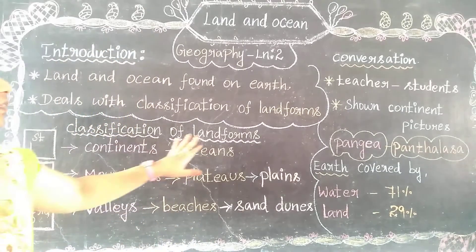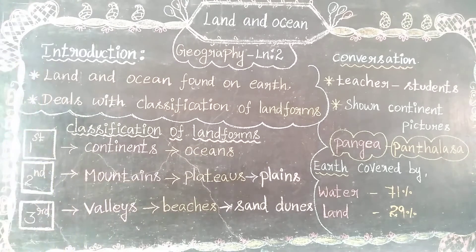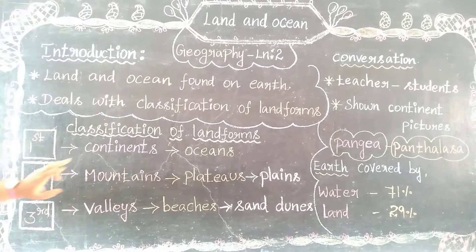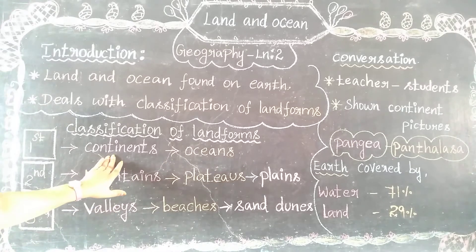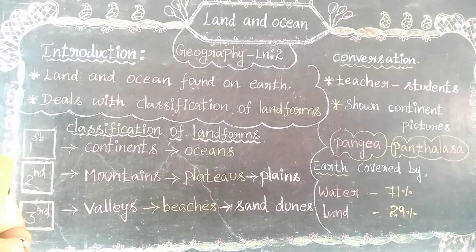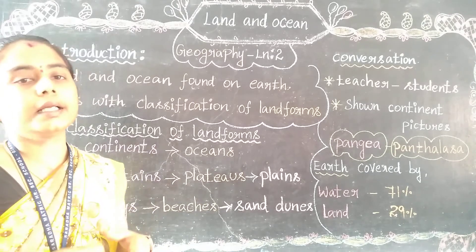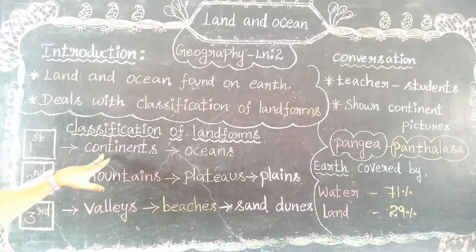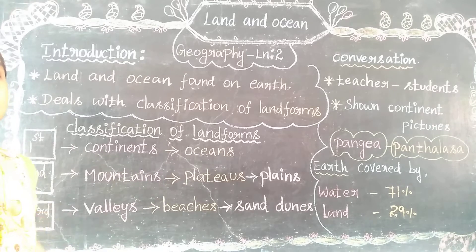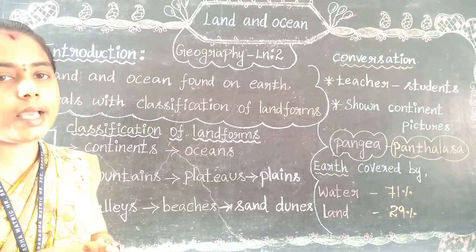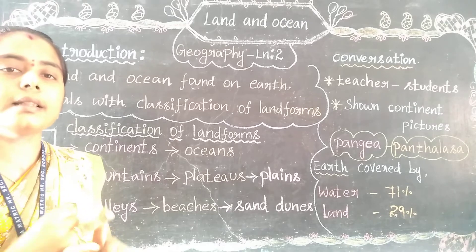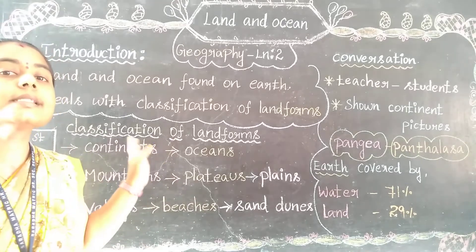There are three classifications of landforms. The first order is continents, the second order is mountains, and the third order is valleys. Continents — 'kandam' in Tamil — we are having seven continents: Asia, Africa, Antarctica, Australia, Europe, South America, and North America. These are all the seven continents.